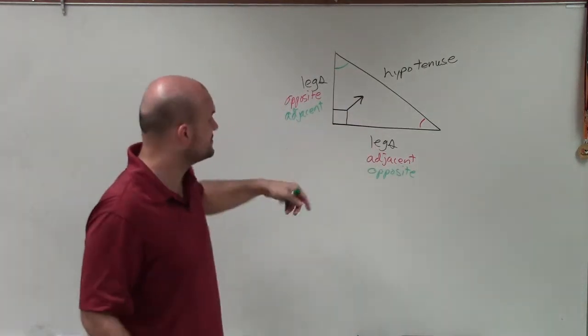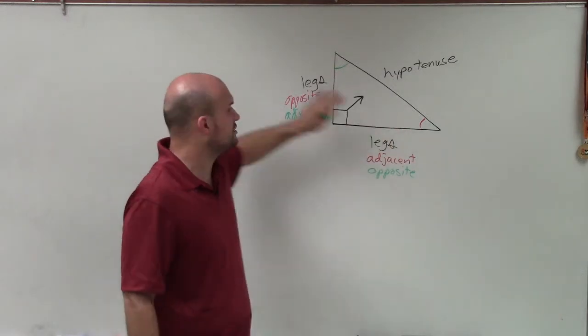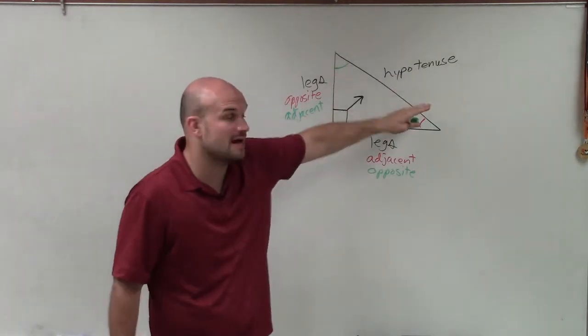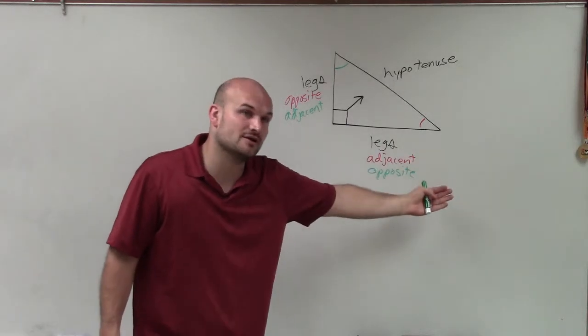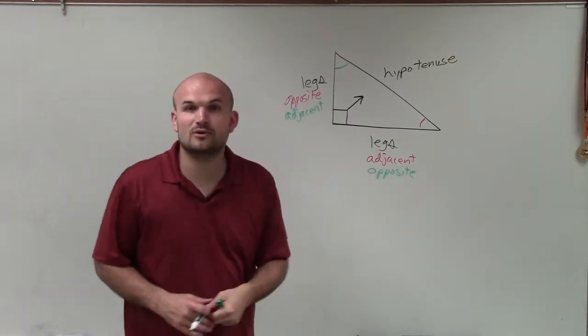We just want to know what the legs are and the hypotenuse. But when we're moving forward with trig, it's very important to not only know the hypotenuse, but also determine depending on which angle I'm using, which is the adjacent, which is the opposite.